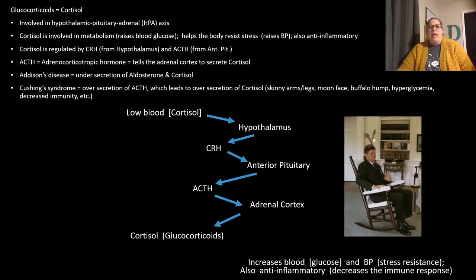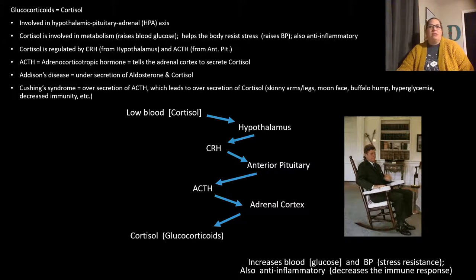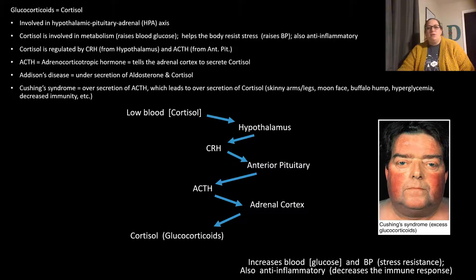Addison's disease, an under-secretion of both aldosterone and cortisol, was notably suffered by President Kennedy, whose tan skin tone was partly a sign of the condition. Cushing's syndrome, caused by over-secretion of ACTH and consequent excess cortisol, is visible in individuals with the characteristic moon-shaped face and other symptoms shown in clinical images.